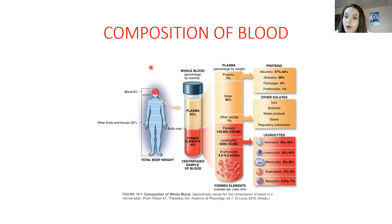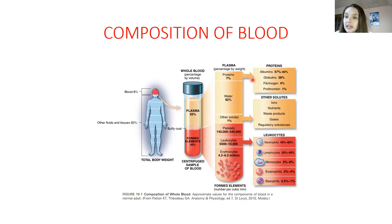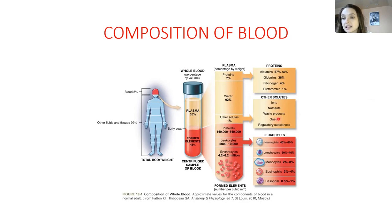Whole blood consists of about 55 percent plasma and 45 percent formed elements. Plasma mainly consists of 92 percent water and 7 percent proteins — albumins, globulins, fibrinogen, and prothrombin — plus 1 percent other solutes such as ions, nutrients, gases, and regulatory substances. Formed elements consist of platelets, leukocytes, and red blood cells.